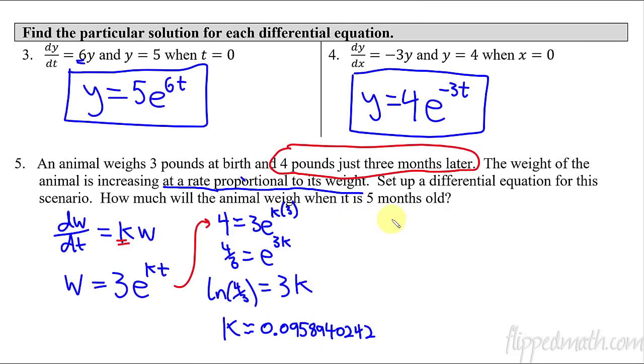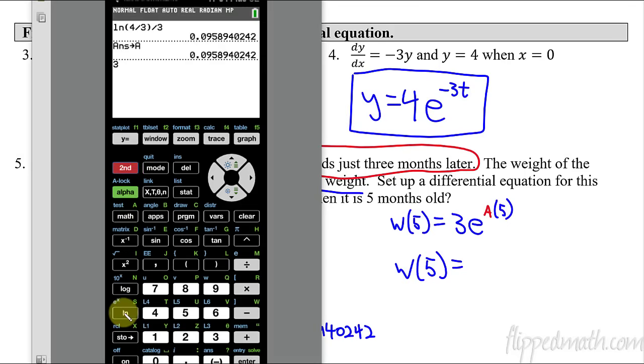All right, so now I come back to this. And now I can answer this question. What is the weight of the animal? So the weight at five months, so W of five, is going to equal my initial, 3EKT. So 3E. Now it's not a K. I know what K is. It's this long thing. But I don't want to type that whole thing out. So instead, I'm just going to say, oh yeah, I stored it as A in my calculator. And that makes this much easier. And then the time was what? The time is five months. So I'm going to do five months. And now you just plug that whole thing into the calculator.